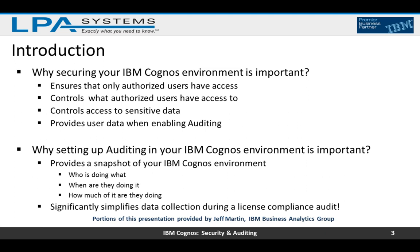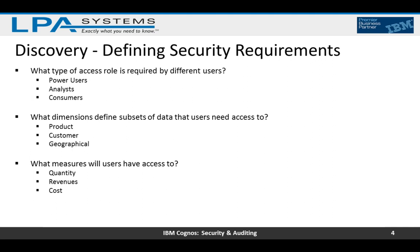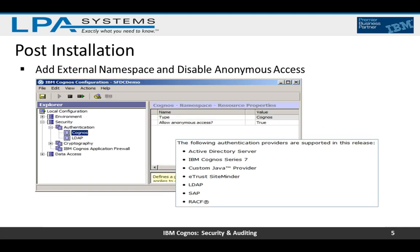Just as with any software implementation, thought needs to be given to security requirements. We need to map out the types of users within the organization and the data access levels — whether by region, by function, or by user type. We also need to determine what authentication sources are being used; the most common are LDAP or Active Directory, but there are others.